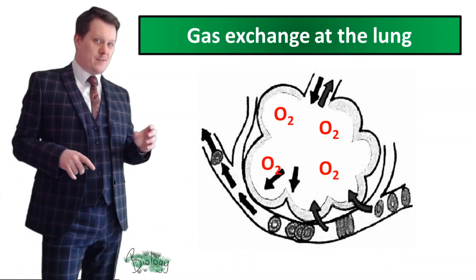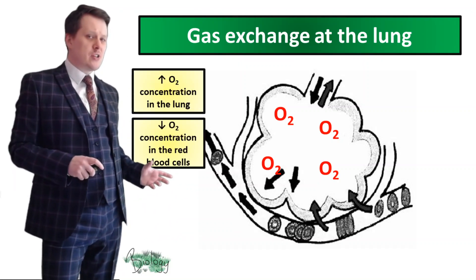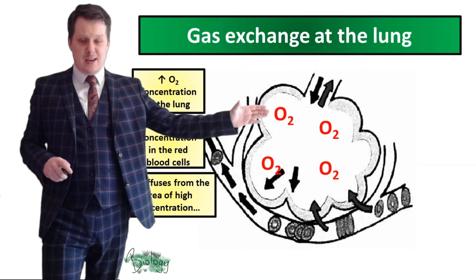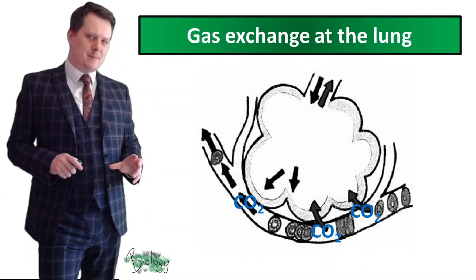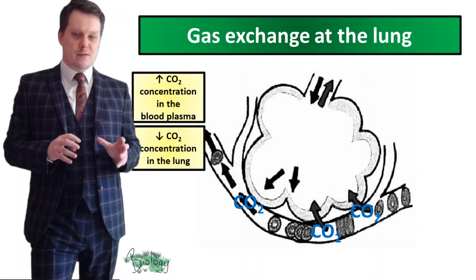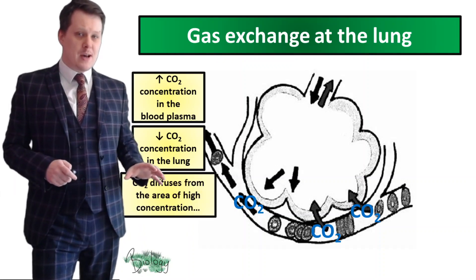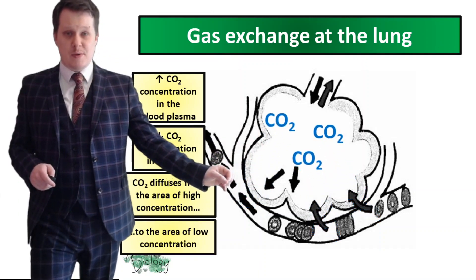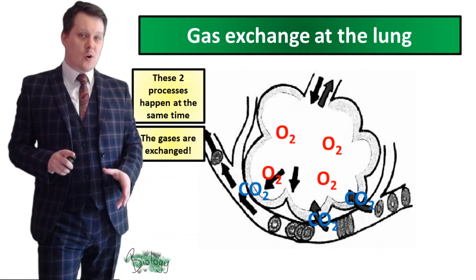When you breathe in air containing 21% oxygen, you increase the concentration of oxygen in the lung. Because the concentration of oxygen in the red blood cells is really low, oxygen diffuses from an area of high concentration in the alveoli to an area of low concentration in the red blood cells. At the same time, because the concentration of carbon dioxide in the blood plasma is really high and the concentration of carbon dioxide in the lung is low — only 0.04% — carbon dioxide diffuses from an area of high concentration in the blood plasma to an area of low concentration in the lung. These two processes happen simultaneously, and we call this gas exchange.